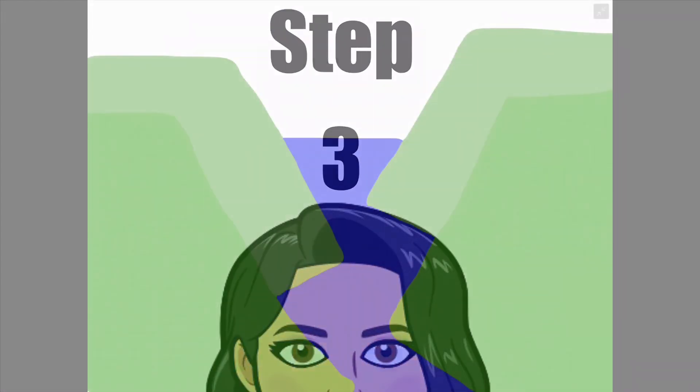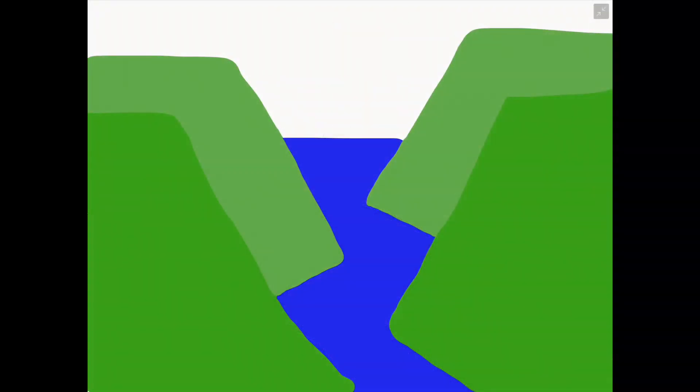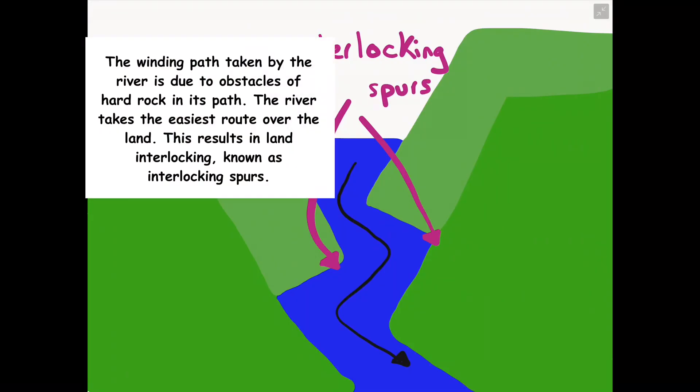Finally, the last step in the formation of this landscape involves the actual path taken by the river, winding between the interlocking spurs or the valley sides of the upper course of the river. Due to the obstacles of hard rock or more resistant rock in its path, the river takes the easiest route it possibly can over the land. This results in land interlocking or crossing over each other, as you can see in this diagram on the screen. This is known as an interlocking spur.